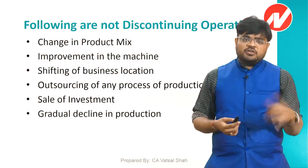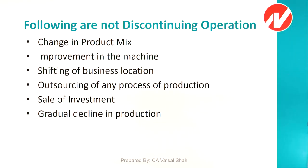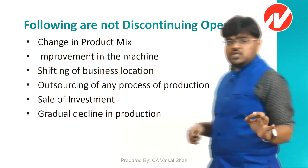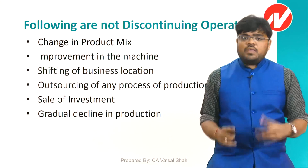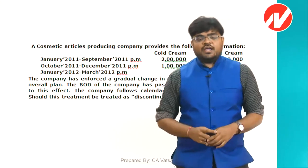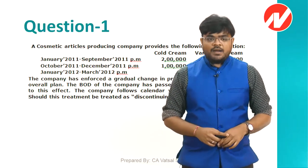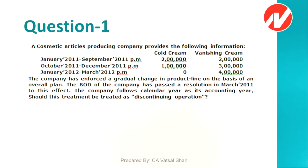These are the activities that are not discontinuing operations: changing product mix, improvement in machinery, shifting of business location, outsourcing of production process, sale of investment, and gradual decline in production. Maximum exam questions come from this list.